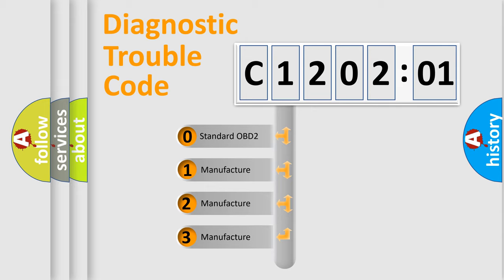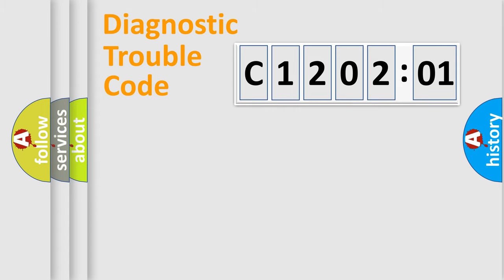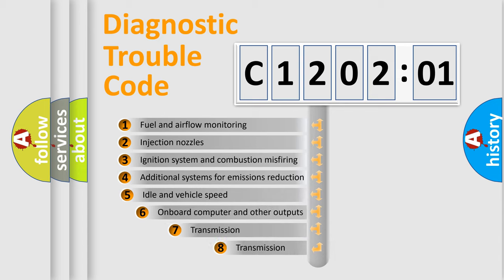If the second character is expressed as zero, it is a standardized error. In the case of numbers 1, 2, or 3, it is a more prestigious expression of the car-specific error.